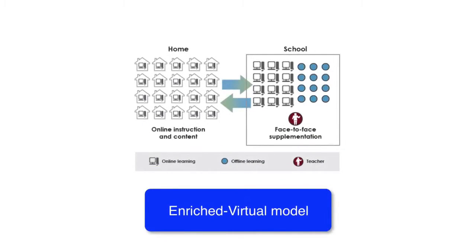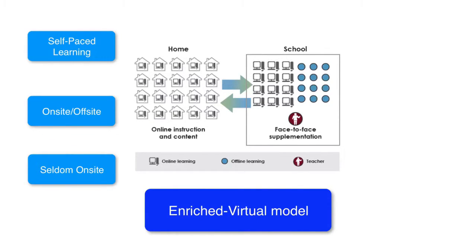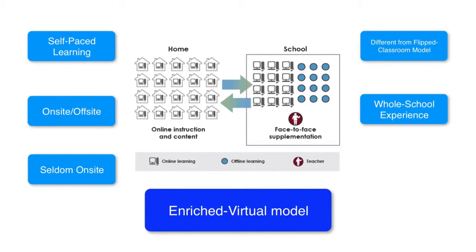And finally, the enriched virtual model. Here's a diagram of the model. This is based on how a school called E-cademy implements the enriched virtual model in their curriculum. You can learn more about their blended learning profile on the Clayton Christensen Institute website. It is a model based on self-paced learning. Online learning occurs both on-site and off-site. Students are seldom on-site at school in the enriched virtual model. This feature makes it different from the flipped classroom model, where students are mostly on-site at school. This model is also a whole school experience, which makes it different from the a la carte model in spite of its many similarities.